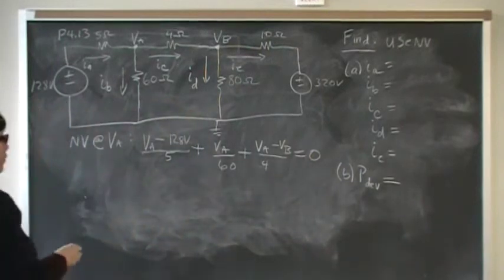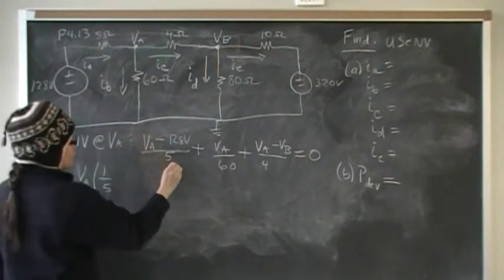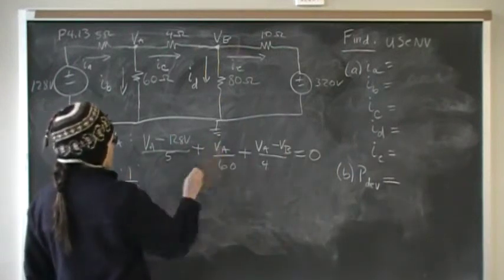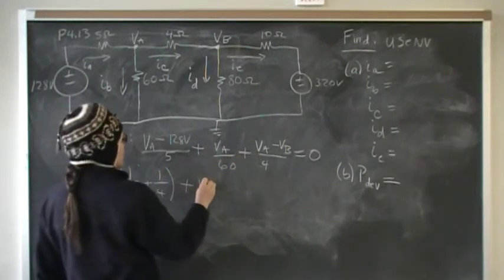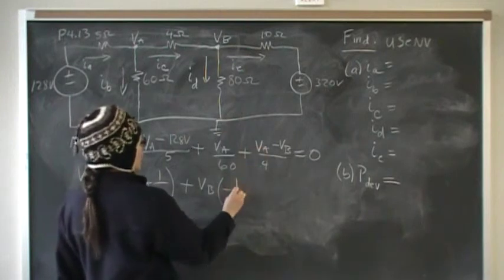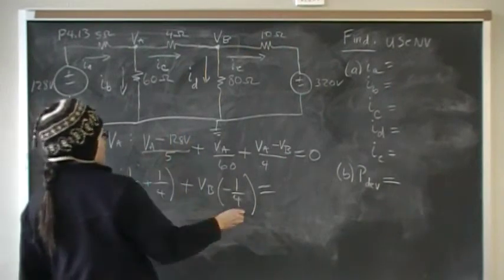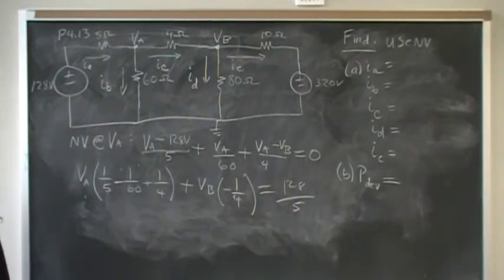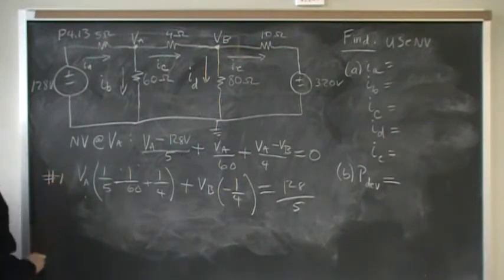Now we're going to group things together. My coefficients in front of VA is one-fifth plus one-sixtieth plus one-fourth. Those are all my coefficients for VA. My coefficients for VB is negative one-fourth, and my constants, I'm going to move to the other side, will be 128 over 5. That gives me my first set of equations that I need for my simultaneous equations. If we have two unknowns, we need two equations, so that's going to be equation number one.